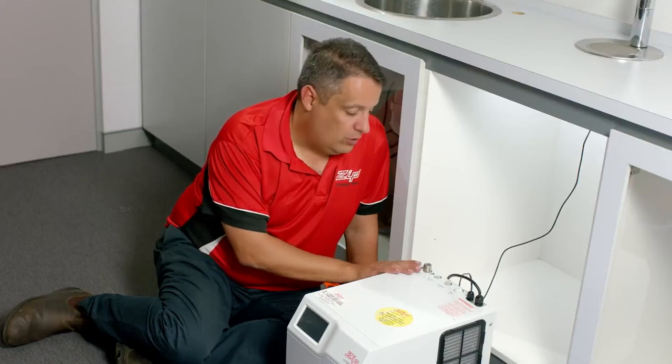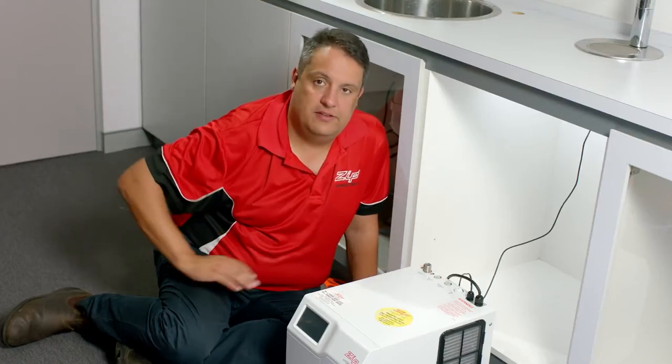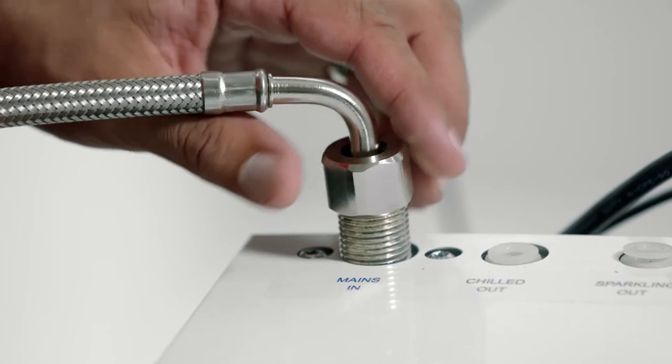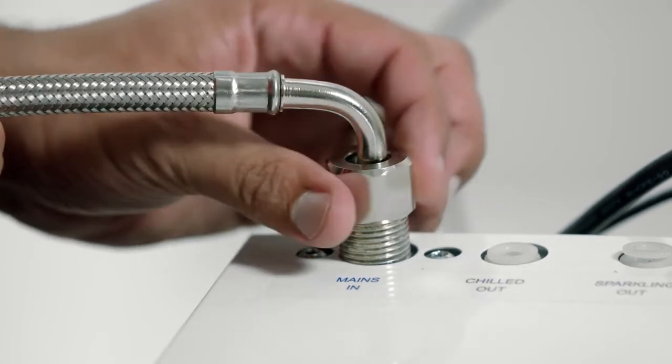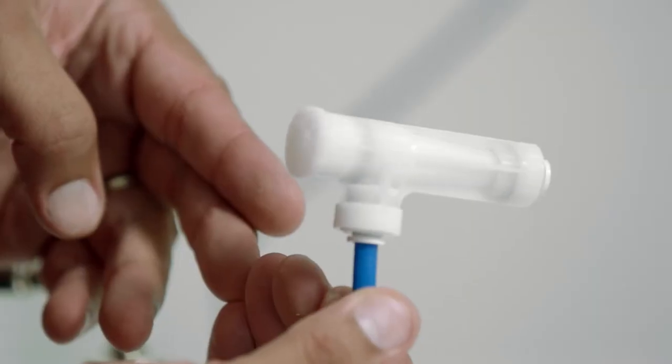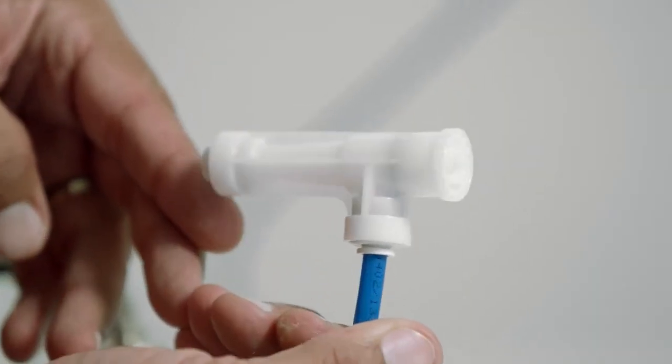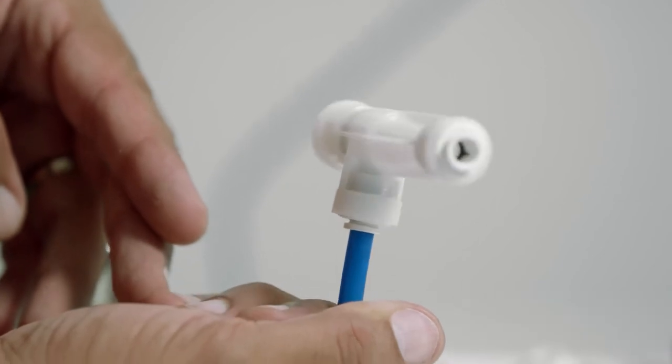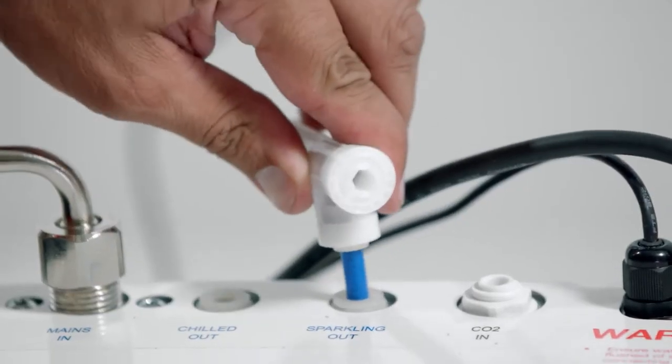First we're going to connect the water supply and the gas to the unit. The braided hose is supplied with the command center. This is your water supply from the mains. You also need to fit your carbonation valve. This has an allen key adjustment on the back of it for a flow rate. This goes in your sparkling out.